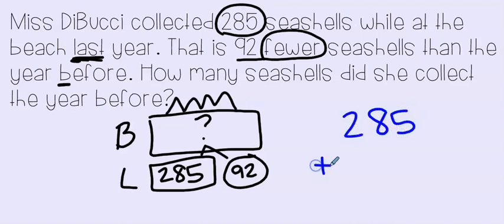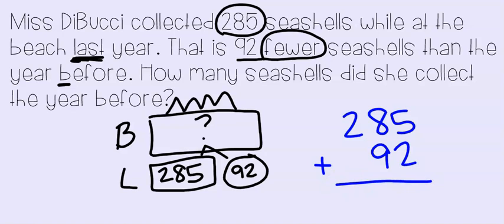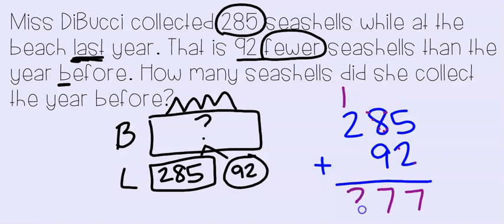Because the top number is the big number — the king of the math mountain — we need to add to solve. 285 plus 92: in the ones place, 5 plus 2 is 7. In the tens place, 8 plus 9 gives us 17 tens, so we make a new hundred, carrying 1. And 2 plus 1 carried over is 3. So the answer is 377.